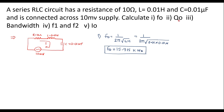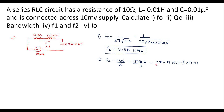Now let us calculate the quality factor Q0. Q0 is equal to omega0 L by R, which is nothing but 2 pi F0 L by R, which is equal to 2 pi into 15.914 into 10 power 3, L value is 0.01, divided by R. The value of resistance is 10. Simplifying this, we will get Q0 is equal to 100.